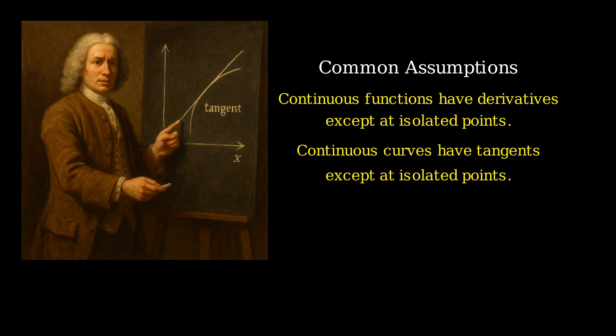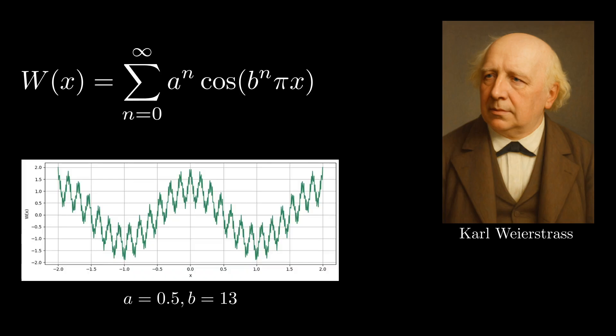But they were wrong. In 1872, the German mathematician Karl Weierstrass gave an example of a continuous function defined with the two parameters a and b that was not differentiable at any value of x.